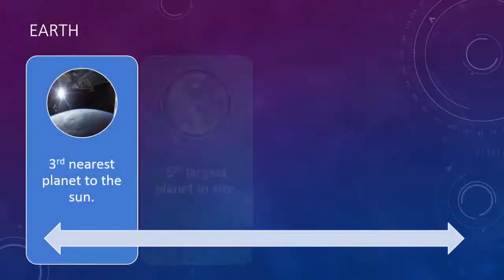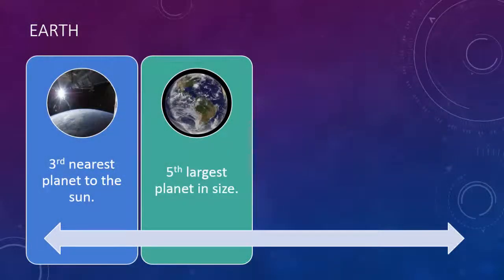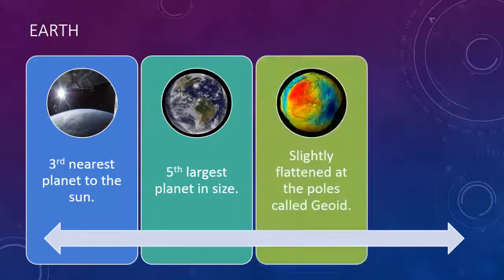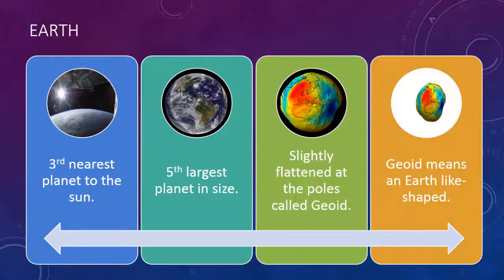Earth: Third nearest planet to the Sun, fifth largest planet in size, slightly flattened at the poles, called Geroid. Geroid means an Earth-like shape.